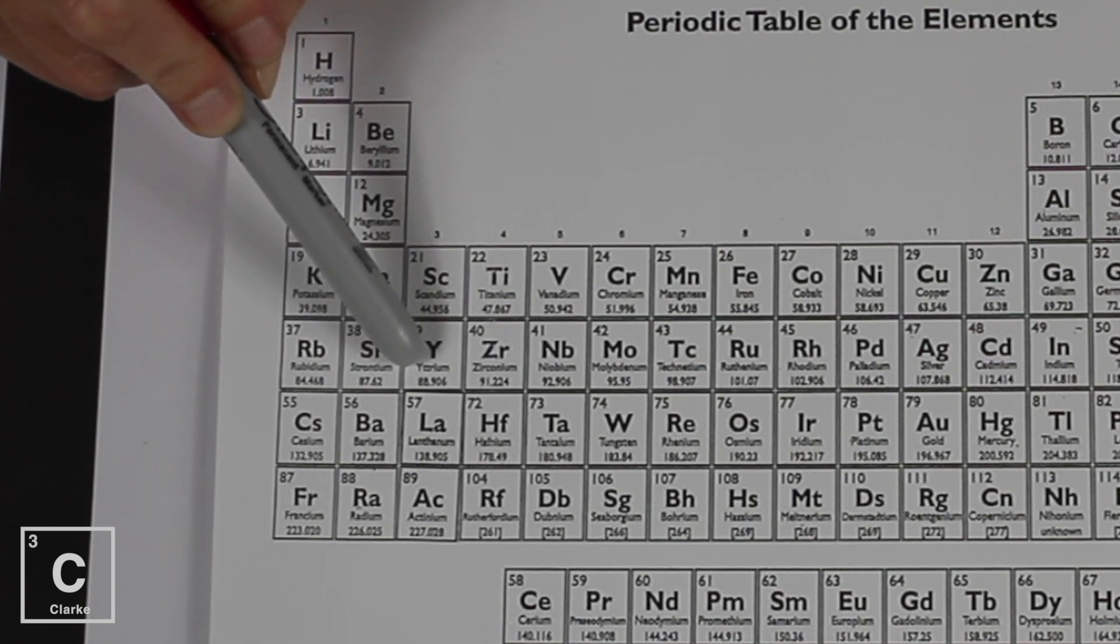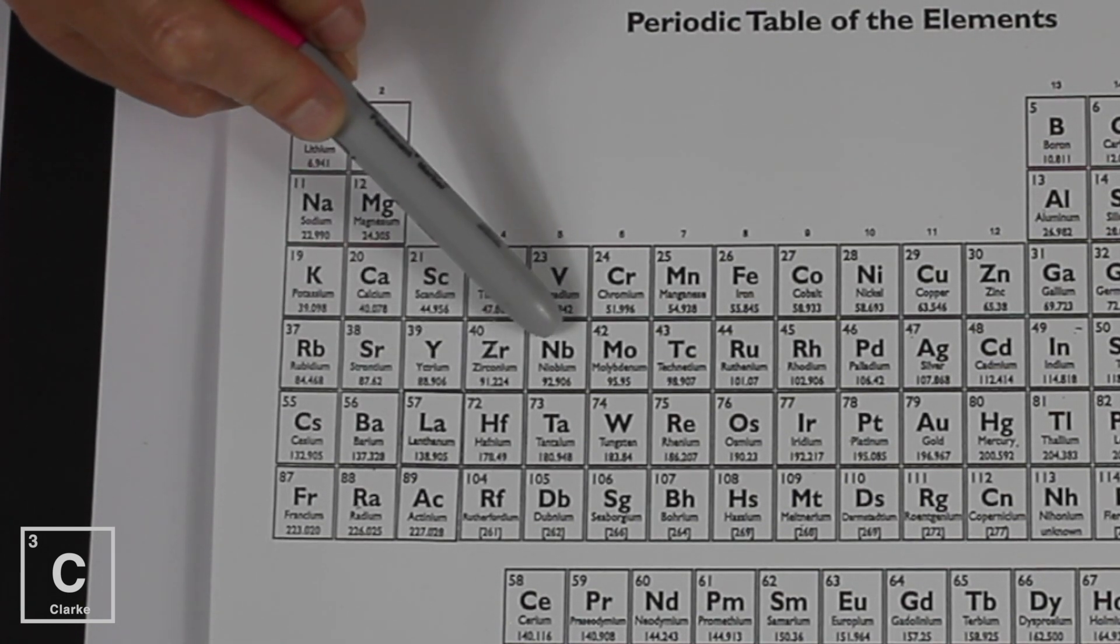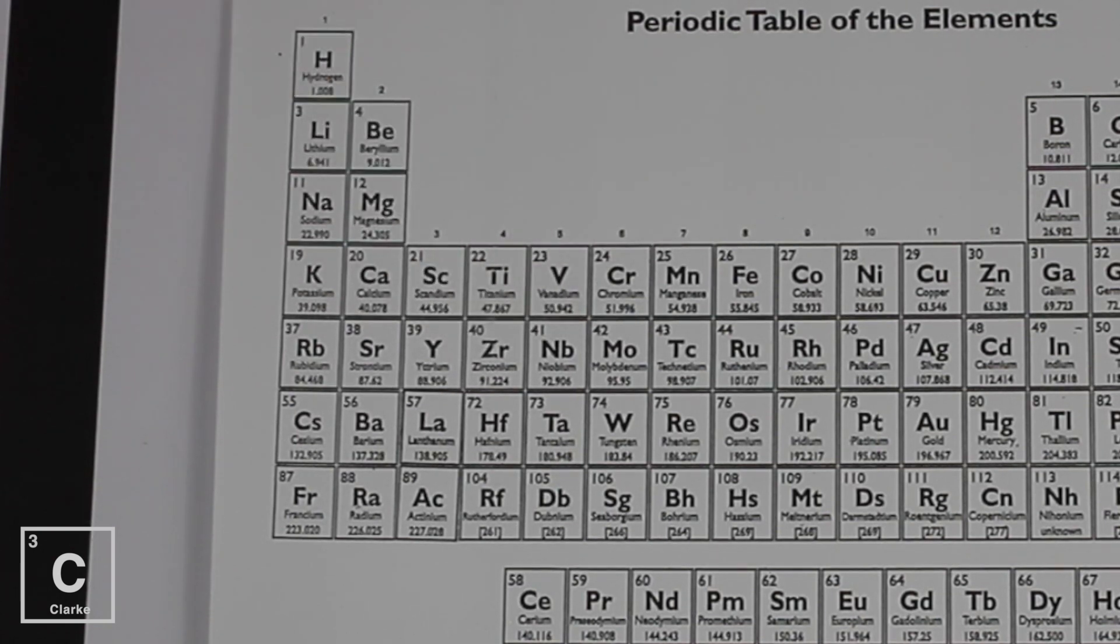Let's go up and see if this one's closer. Nope, it's 88. Let's go down, 92. Zirconium, that's got to be the substance that we were running our sample for.